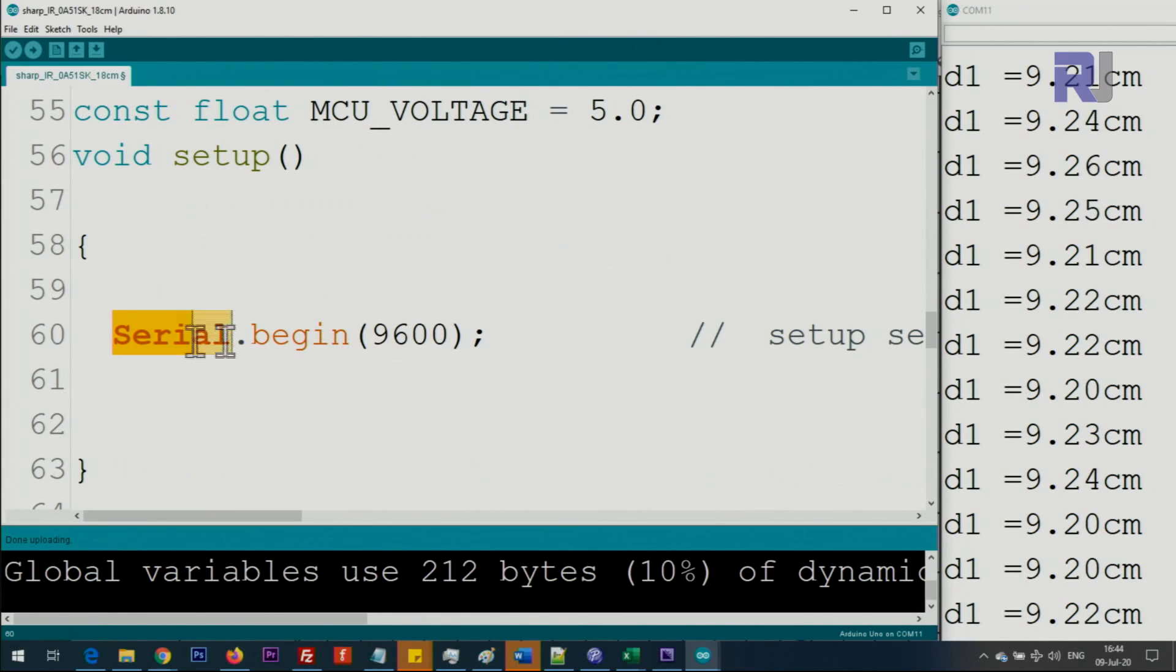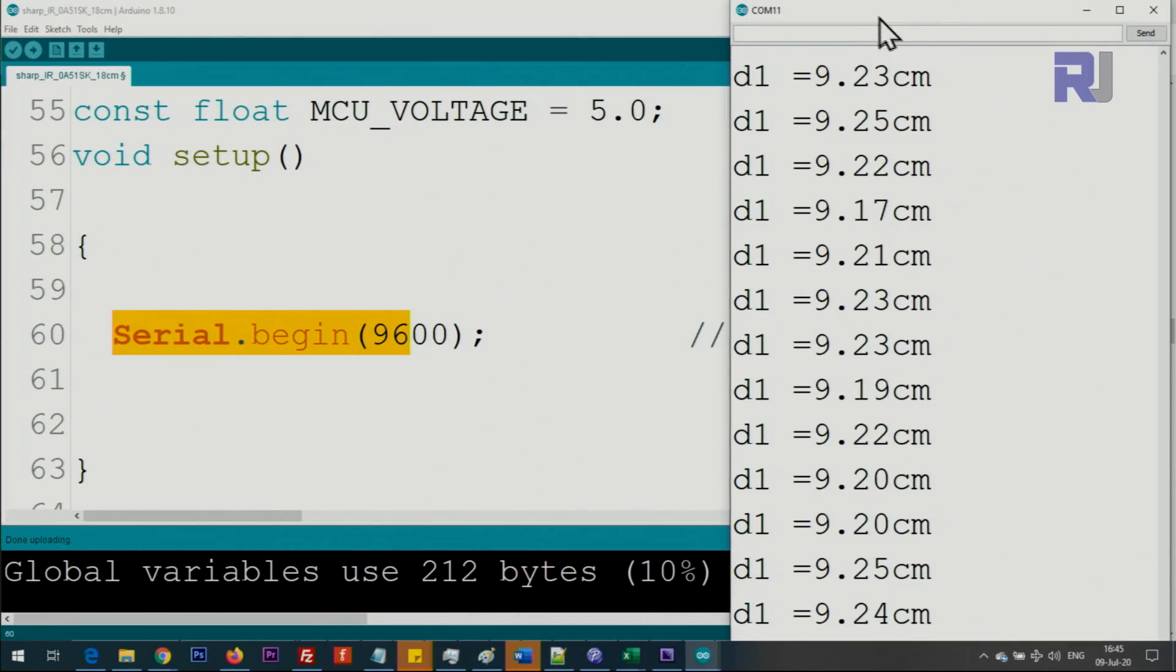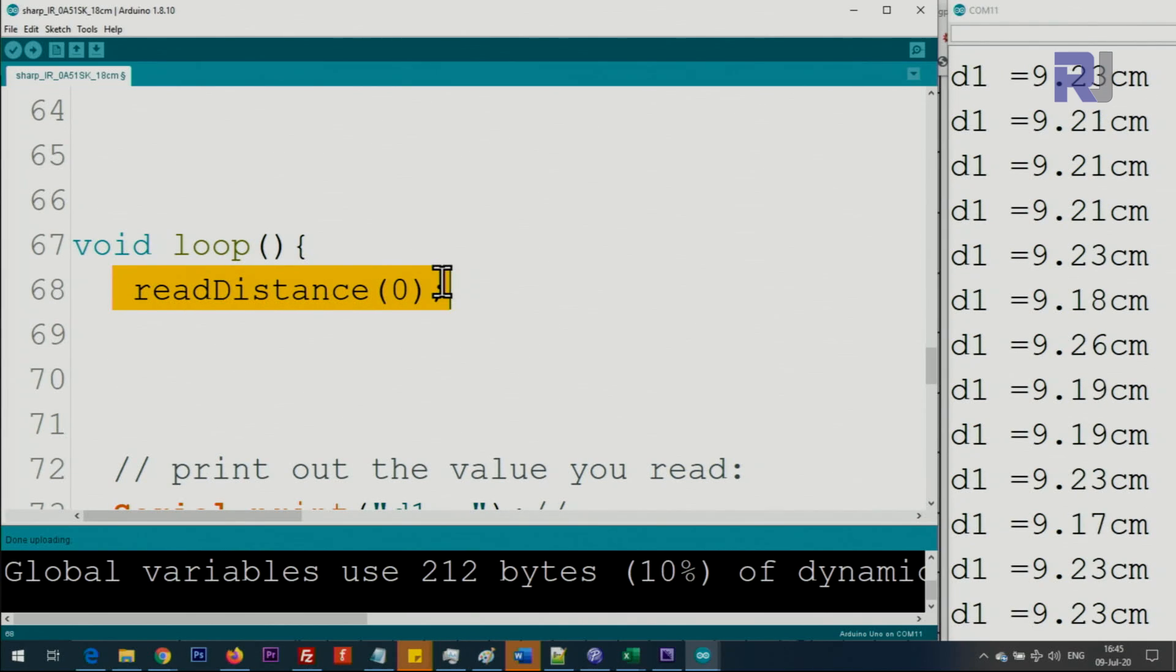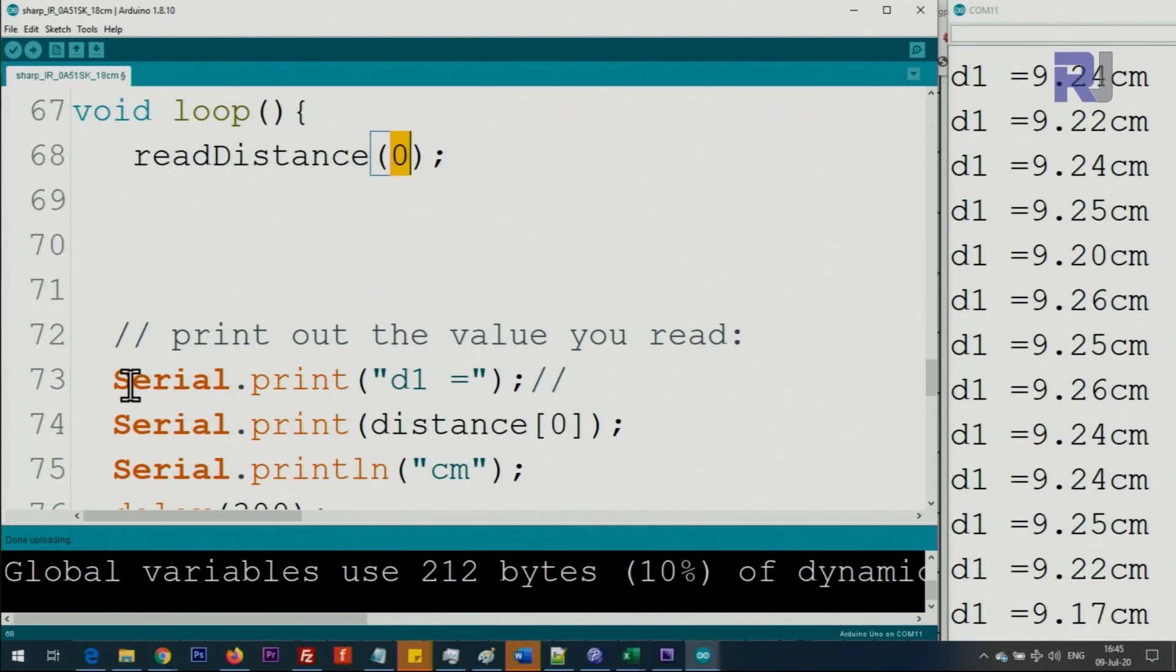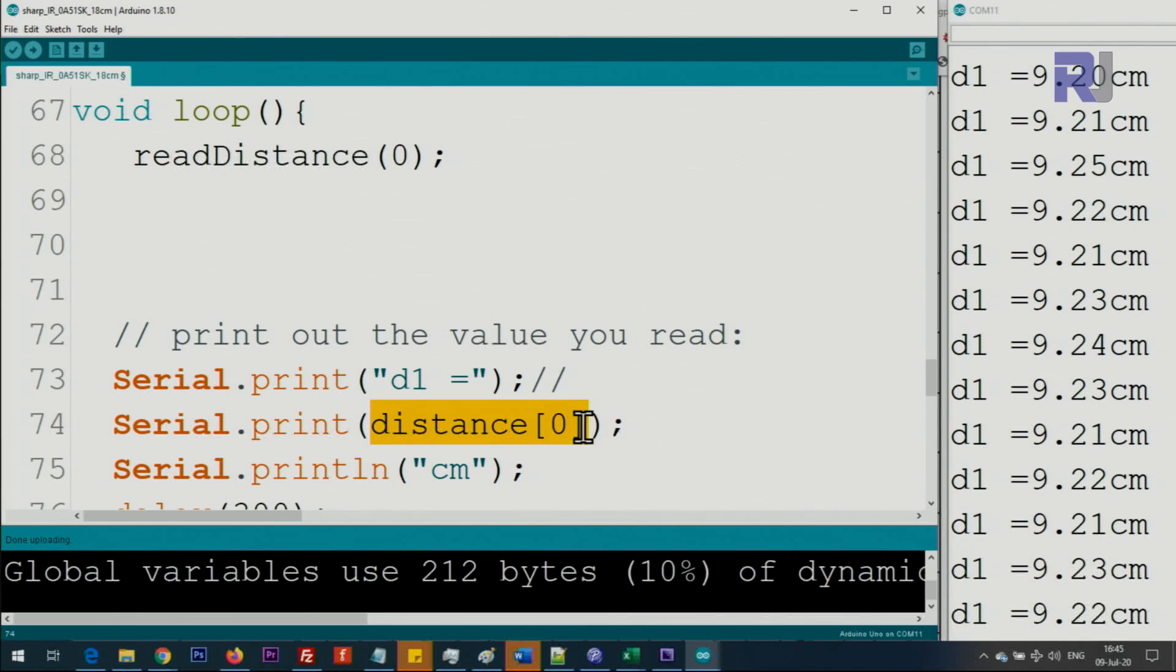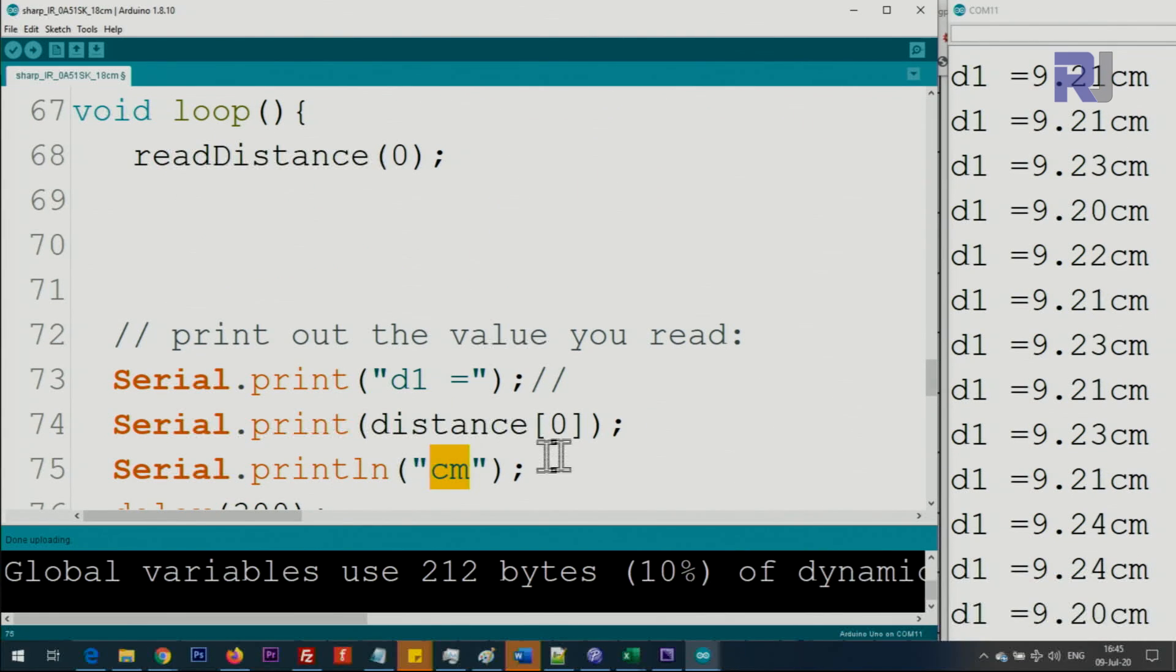Inside the setup we initialize the serial monitor with 9600 baud. If you come here to the lower section you will see 9600, so this must match otherwise you will not be able to read it. This function is going to measure the distance, and the 0 means the first sensor. If you have a second sensor put 1, 2, 3, but start from 0 because it starts with 0. This line is printing the text 'd1=' and then printing the distance for sensor 0, and at the end I've added 'centimeter'.